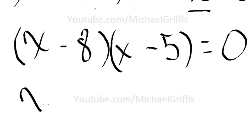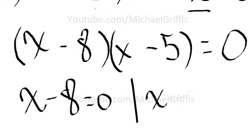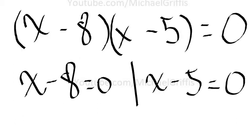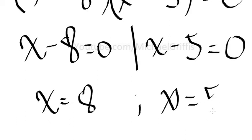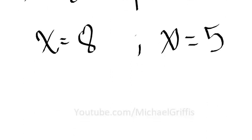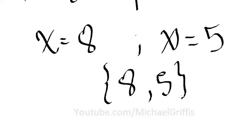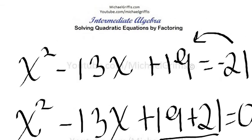Now we set each one of these to zero. It's all trivial from here. So x equals 8 and x equals 5. Our solution set will have 8 and 5 in it. Two solutions.